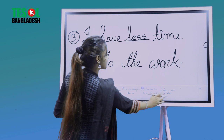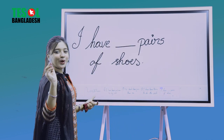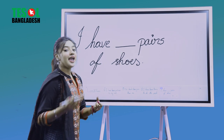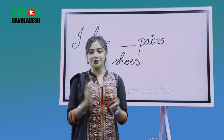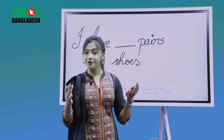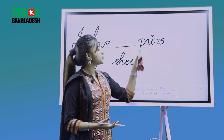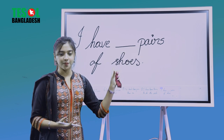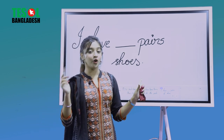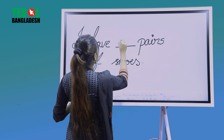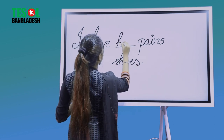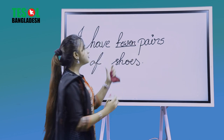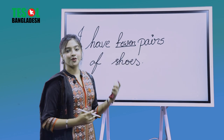Moving to the last question — very easy. I have dash pairs of shoes. We have been practising less and fewer, countable and uncountable. Shoes? Pairs of shoes? Obviously countable. So the answer is fewer. I have fewer pairs of shoes.